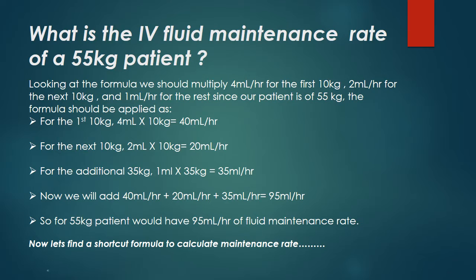What is the intravenous fluid maintenance rate of a 55 kilogram patient? For the first 10 kg: 4 mL/hr × 10 kg = 40 mL/hr. For the next 10 kg: 2 mL/hr × 10 kg = 20 mL/hr. For the additional 35 kg: 1 mL/hr × 35 kg = 35 mL/hr. Adding 40 + 20 + 35 = 95 milliliters per hour. So a 55 kilogram patient would have a fluid maintenance rate of 95 milliliters per hour.